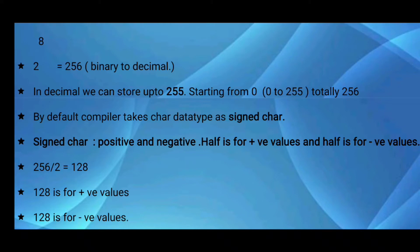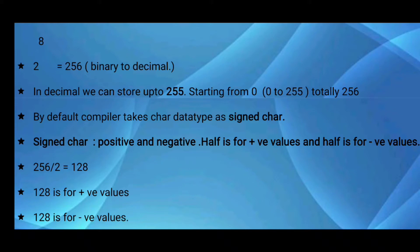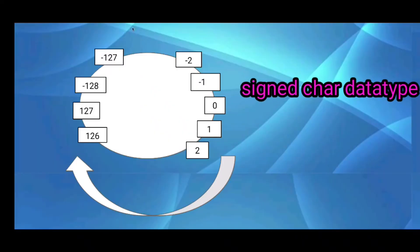If you declare any character or integer data type variable, by default the compiler treats it as signed int or signed char. If it is signed char, the whole memory will be split into two to store both positive and negative values. In character data type, 256 is the maximum value in the decimal number system. If it is signed char, the memory is split by 2, so 256 divided by 2 gives 128 — in signed char, 128 values are used to store negative values.